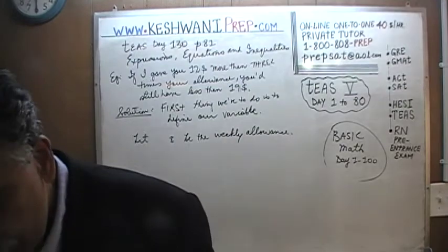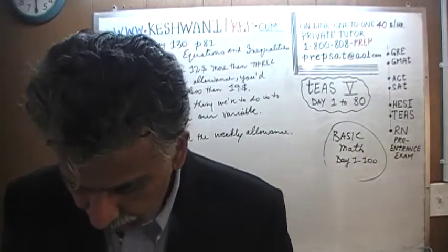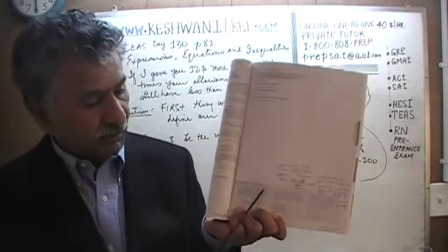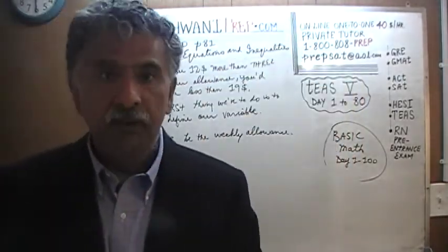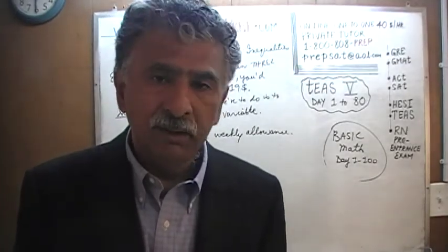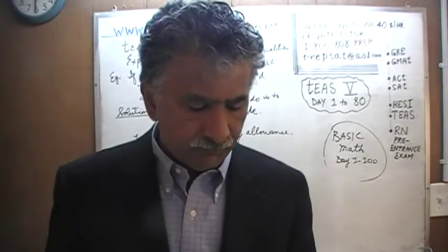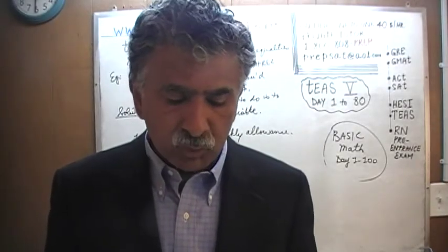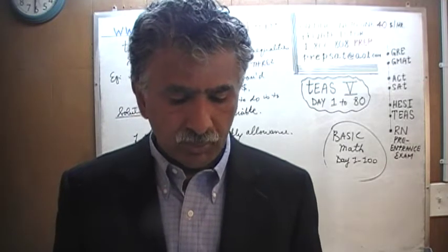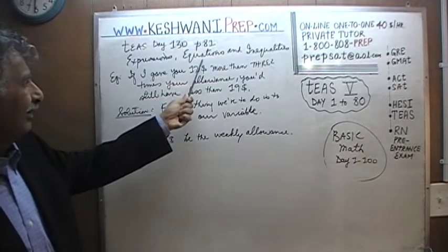The problem as I put on the blackboard is not verbatim — I just put down the gist of it, but the actual problem you will find on page 81, at the very top, not the exercises at the bottom. It says: 'How many dollars do I get for my allowance?' asked the young boy. The father replied: 'If I gave you 12 dollars more than 3 times your current allowance, you will still have less than 19 dollars.' This falls under the topic of expressions, equations, and inequalities.